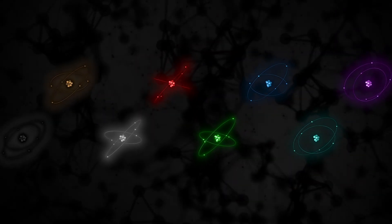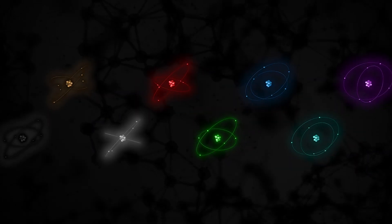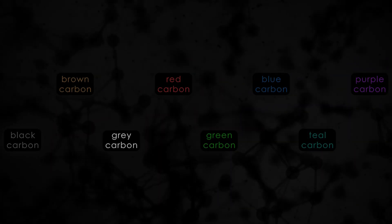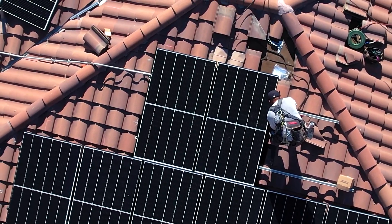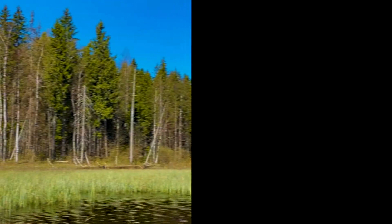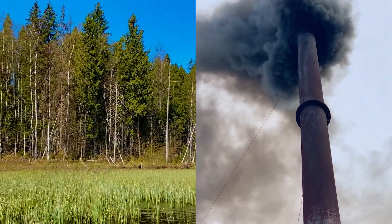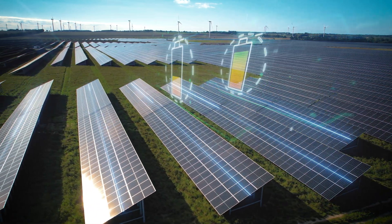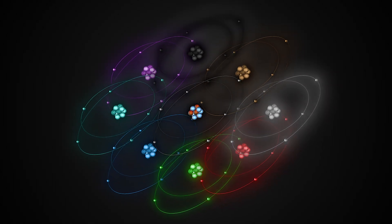So there you have it, the rainbow of carbon in all its glory. Despite the unfortunate reality that carbon doesn't actually form a pretty rainbow, these labels help streamline the conversation about moving towards a carbon-neutral future. By focusing on protecting our carbon reservoirs and cutting back on nasty carbon pollution, we can shift society towards a more sustainable tomorrow. Hopefully now you can see this dull little element with a little more complexity, showing its true colors through a rainbow-tinted lens.